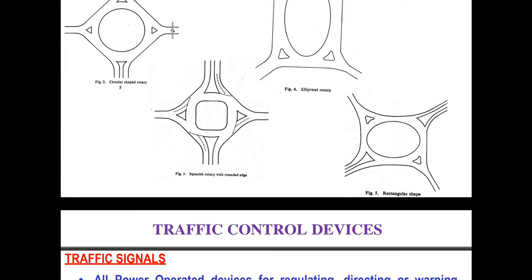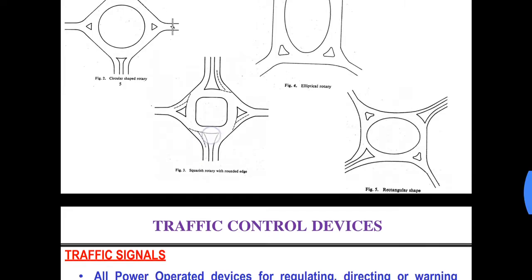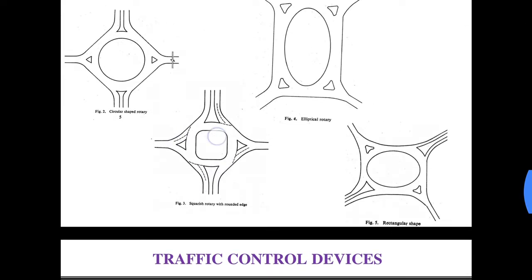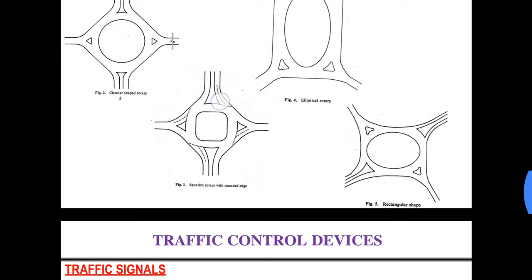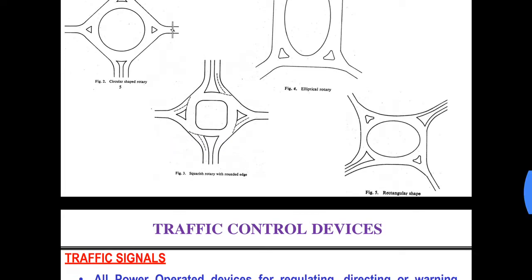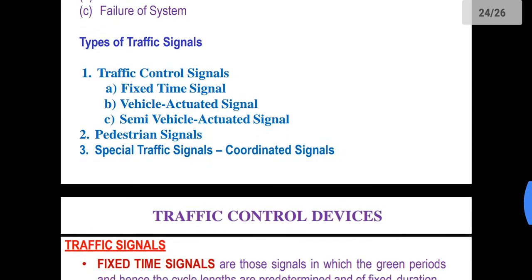So in one cycle there will be green time for the southern direction, then green time for the western direction, green time for the northern direction, and green time for the eastern direction, and then again it will come to the southern direction. This will complete one cycle.